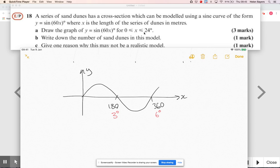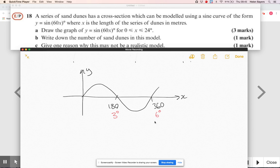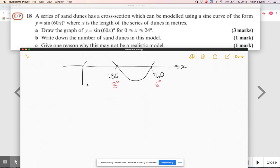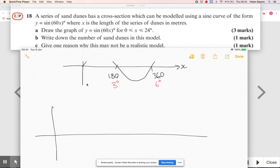If I divide each of those by 60, that just lets me think about how many cycles am I going to get in. If I've got to go up to x is 24, well six times four is 24, so I just need to fit four cycles of the sine curve.